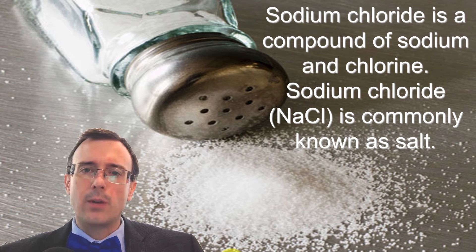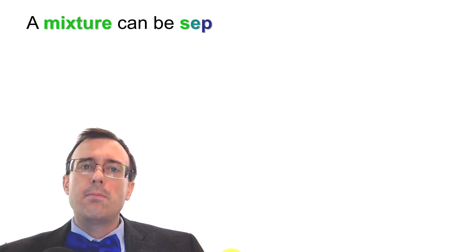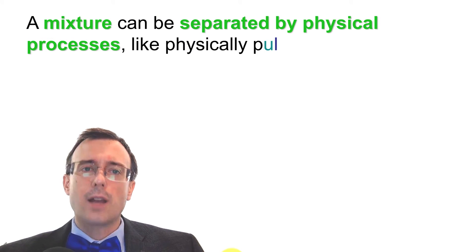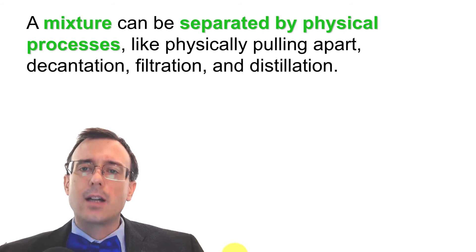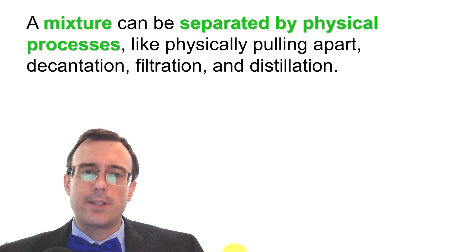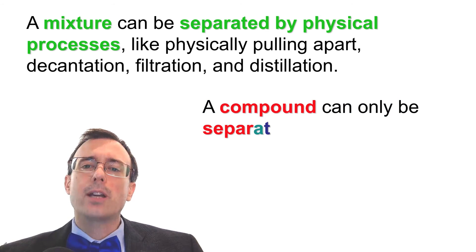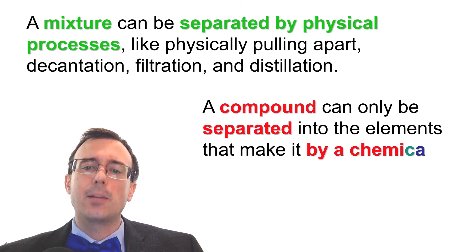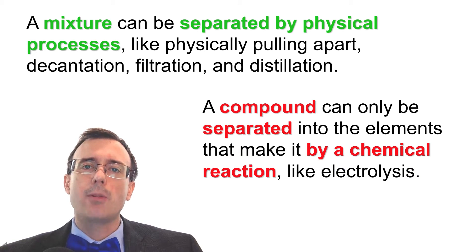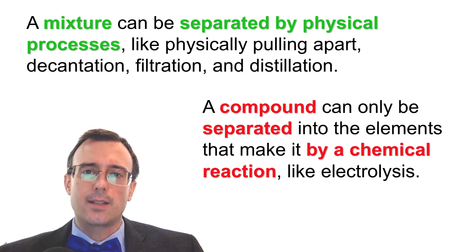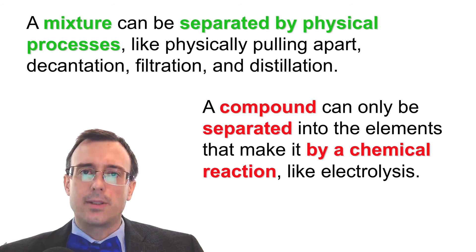How else can we distinguish compounds from mixtures? A mixture can be separated by physical processes like physically pulling it apart, decantation, filtration, and distillation. However, a compound cannot be separated by physical means — a compound can only be separated into its elements by a chemical reaction. For example, one of the most common ways to separate a compound into its elements is electrolysis — putting electricity through it to break apart the bonds and separate those elements.